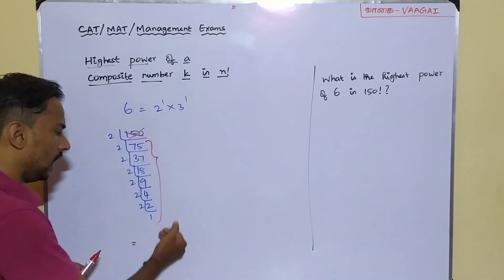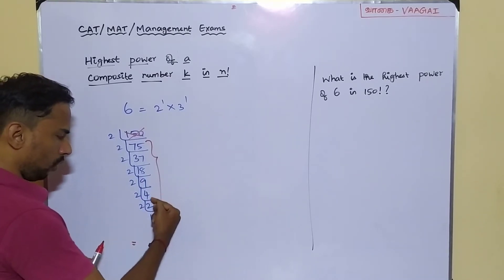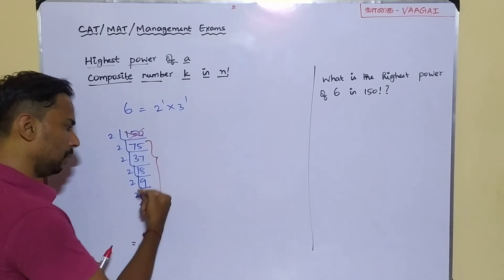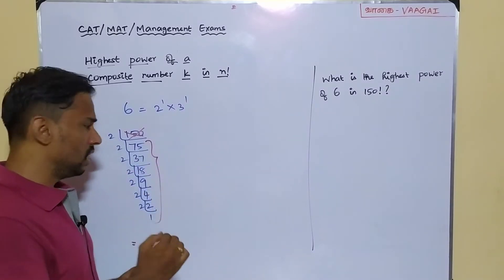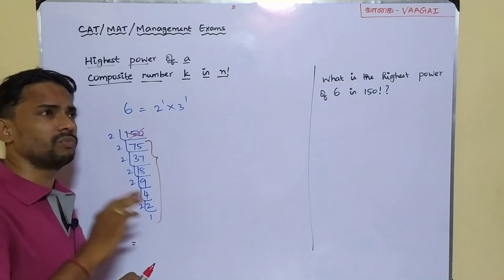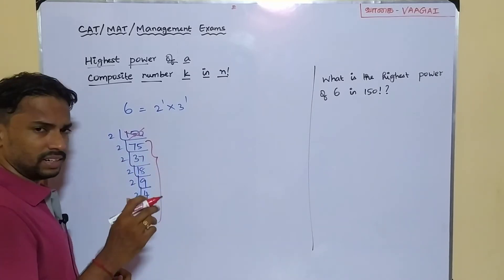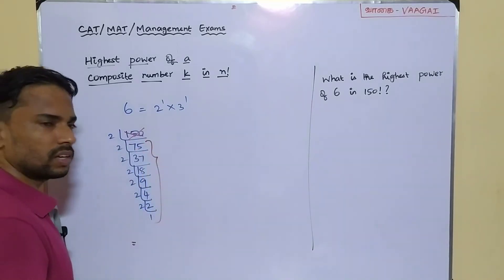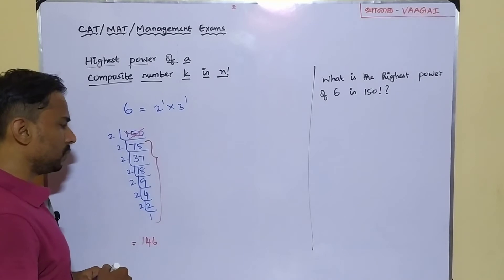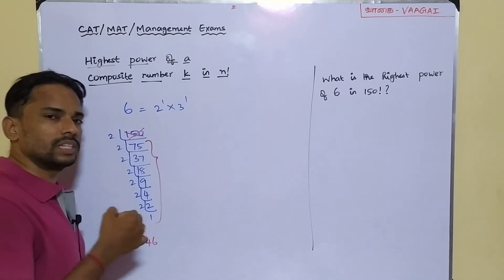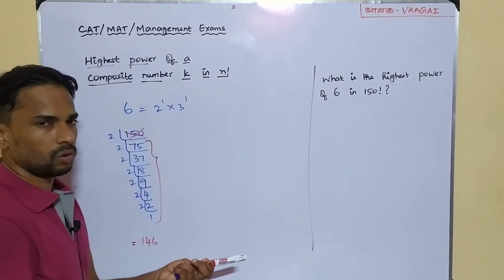As usual, what do we do? We'll just strike out our first number. We'll eliminate our first number and all the remaining numbers, we will be adding it in order to get the highest power of 2 in this 150 factorial. I'm going to add all these numbers. 4 plus 2 plus 1 will be 7, and 7 plus 9 would give you 16. 16 plus 18 would give you 34. 34 plus 37 would give you 71, and 71 plus 75 will finally give you 146. This means I can have 2 power 146 inside this 150 factorial.